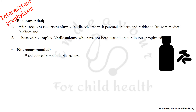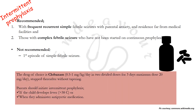Intermittent prophylaxis is recommended in frequent recurrent simple febrile seizures, especially if parents have significant anxiety and reside far from medical facilities, and in patients with complex febrile seizures not started on continuous prophylaxis. It is not recommended for the first episode of simple febrile seizure. The drug of choice is clobazam at 0.5 to 1 mg/kg/day in two divided doses for three days, maximum 20 mg/day, stopped after three days without tapering.